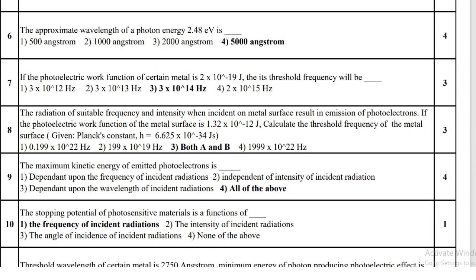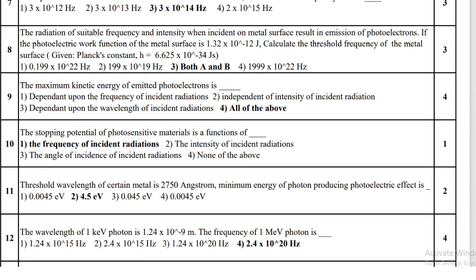The approximate wavelength of a photon with energy 2.48 electron volt is 50000 angstrom. If the photoelectric work function of a certain metal is 2 × 10⁻¹⁹ joule, then the threshold frequency will be 3 × 10¹⁴ hertz.